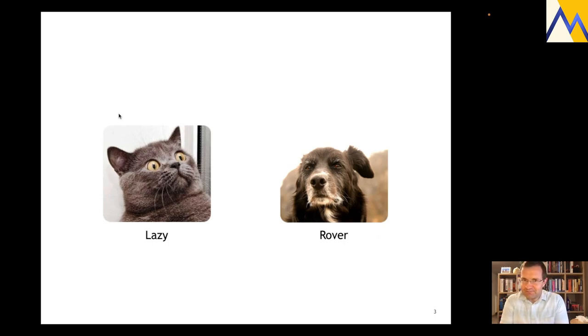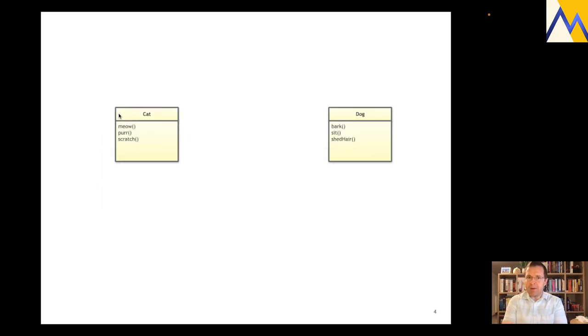Lazy and Rover. Of course, Lazy and Rover are very complex personalities. But although it might belittle me now, I now represent them very easily by means of this Cat and Dog class. So cats, they meow, they purr, they scratch. And I know the cats can usually do a little more. And dogs, they bark, they sit, and they shed hair. So this is two regular classes used to represent cats and dogs.